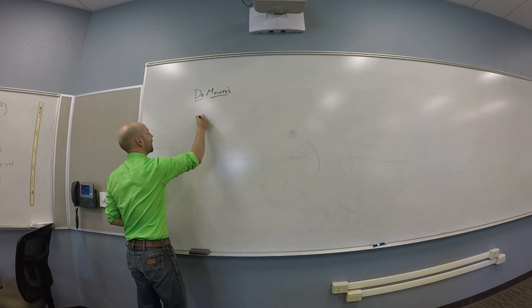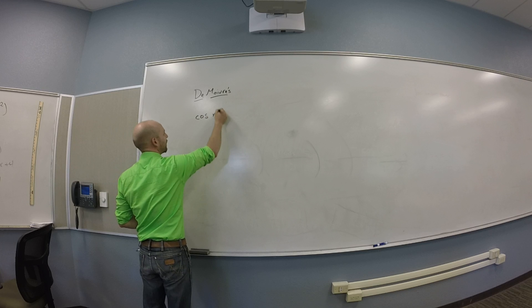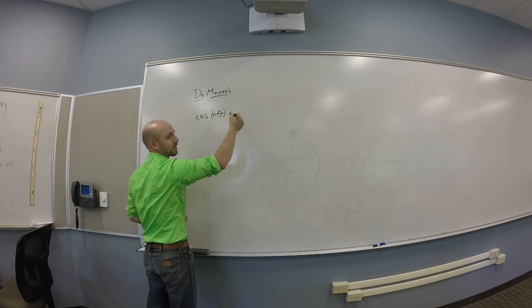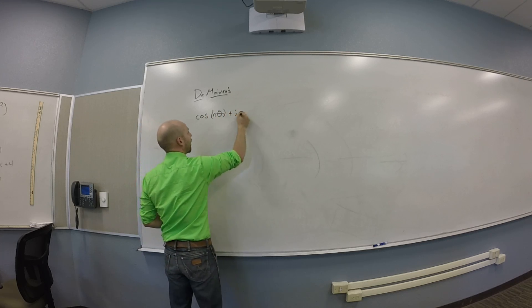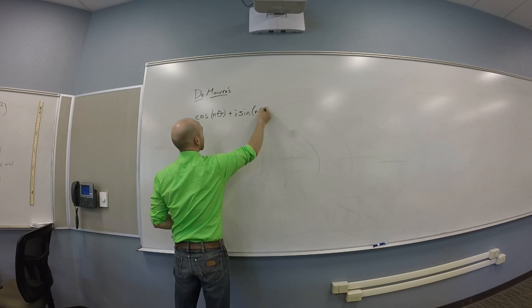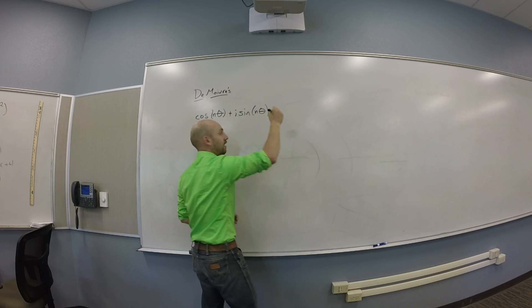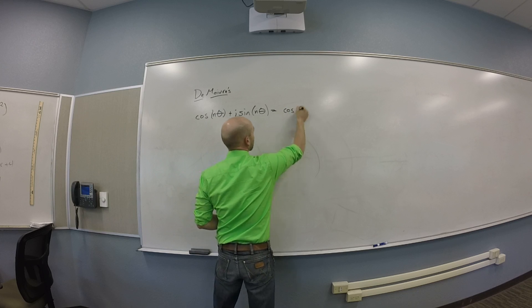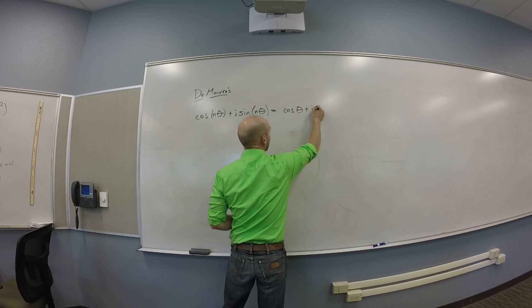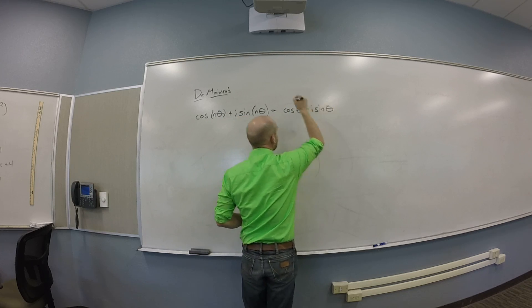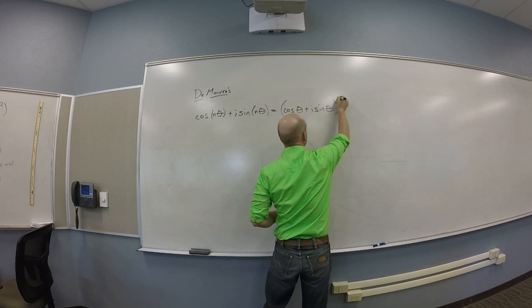Cosine of n theta plus i sine of n theta equals cosine theta plus i sine theta, all raised to the n.